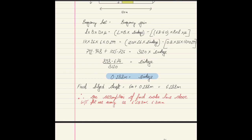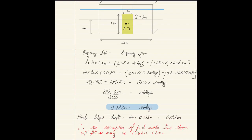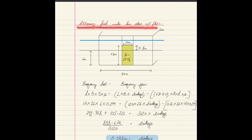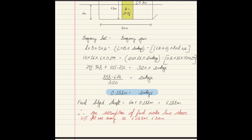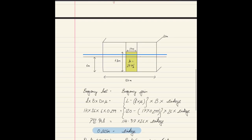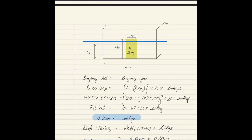We now check our initial assumption: we assumed the final waterline was above the watertight flat, which has a height of 6.8 meters. However, our calculated draft of 6.288 meters is less than 6.8 meters, so the assumption of the final waterline being above the watertight flat was wrong. We must redo the calculation assuming the final waterline is below the watertight flat.